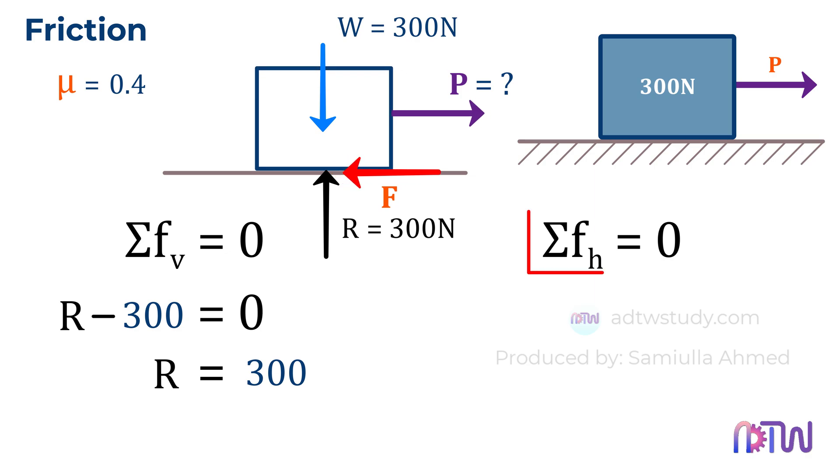Therefore, if we apply the summation of horizontal forces, we consider forces acting to the right as positive and forces acting to the left as negative. So, force P minus force F will be equal to zero. If we rearrange this, we find that force P is equal to force F.